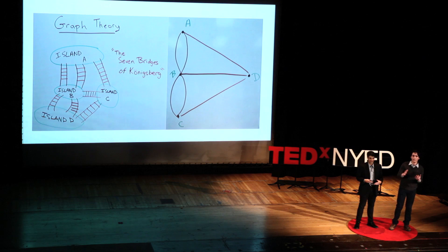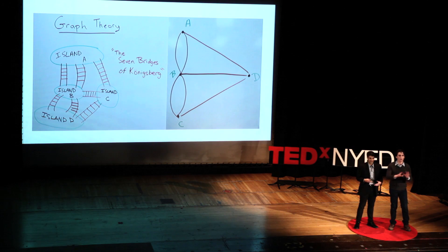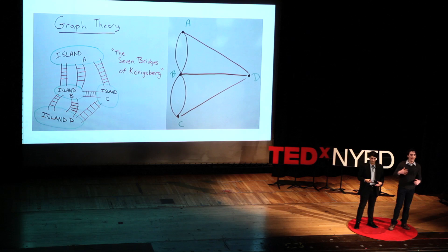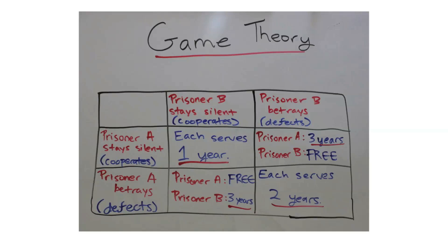We went on to explain the basics of graph theory — the definitions, the graphs, the visualizations. Then after that, we were able to give a more rigorous proof as to why this problem had no solution, and how to solve other problems in graph theory.